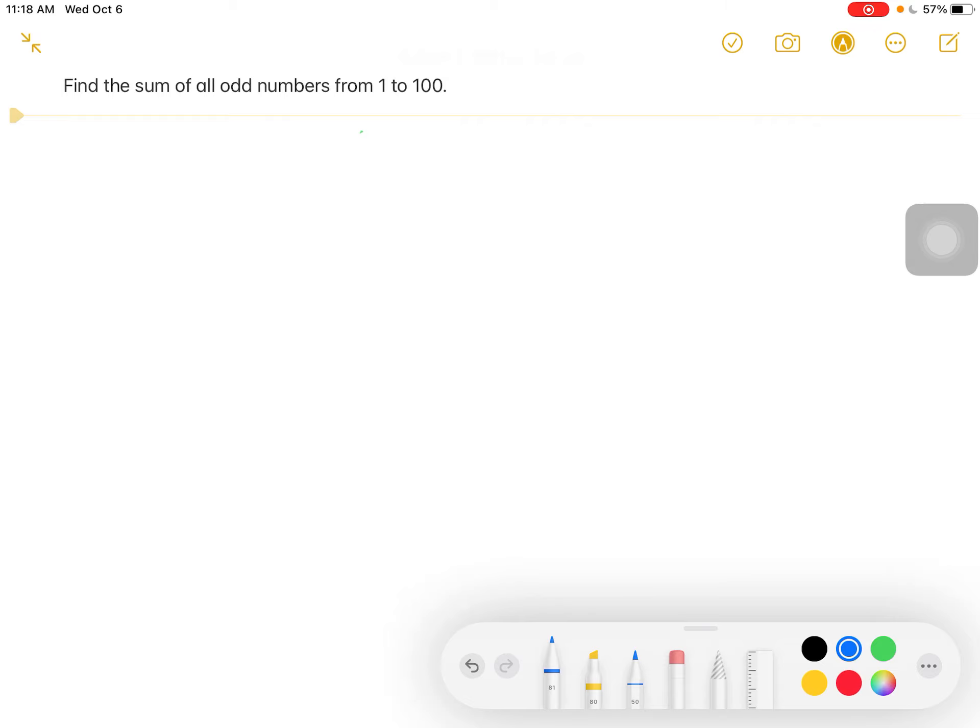So with that, how do we find the sum of all odd numbers from 1 to 100? Some of you might think that you will just add it one by one. 1 plus 3 plus 5 plus 7 plus 9 plus all the way to 93,